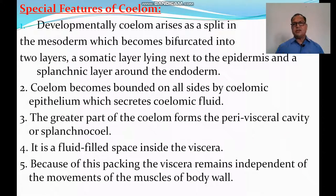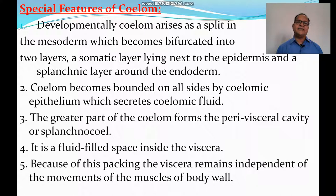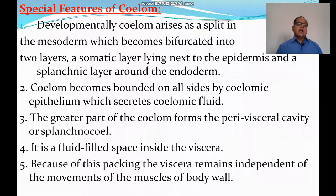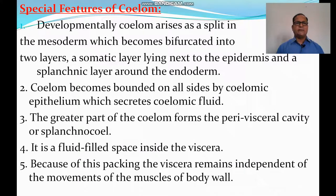Special features of Coelom. First, developmentally the Coelom arises as a split in the mesoderm, which becomes bifurcated into two layers: a somatic layer lying next to the epidermis, and a splanchnic layer around the endoderm. The inner mesoderm is called the splanchnic layer, and the outer mesoderm is called the visceral or somatic layer.